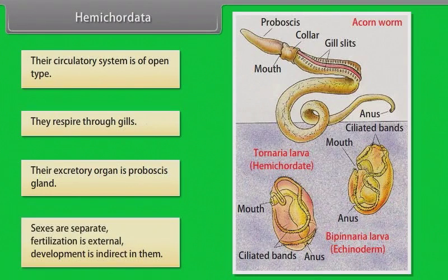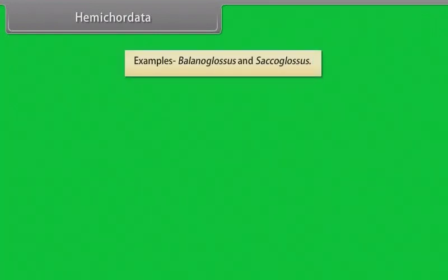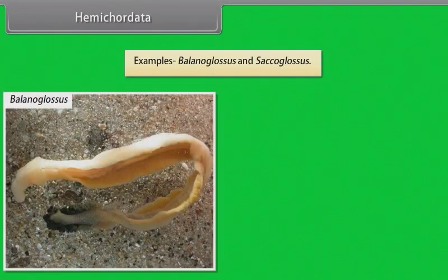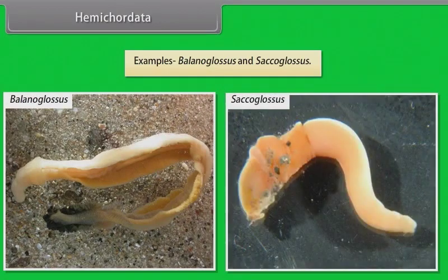Their excretory organ is the proboscis gland. Sexes are separate. Fertilization is external. Development is indirect. Examples: Balanoglossus and Saccoglossus.